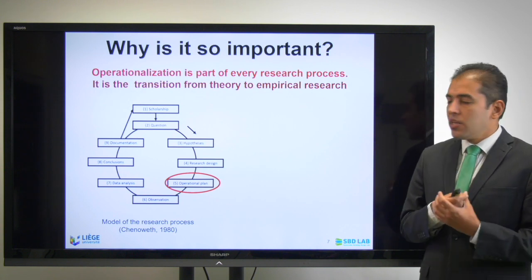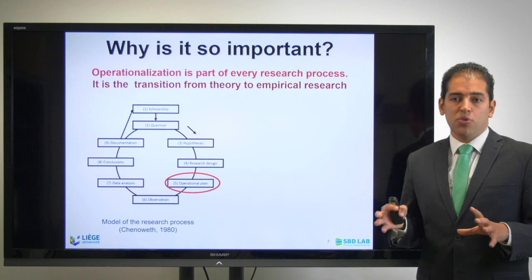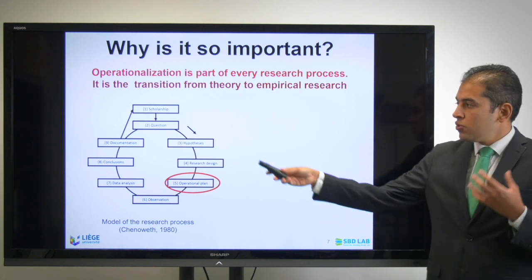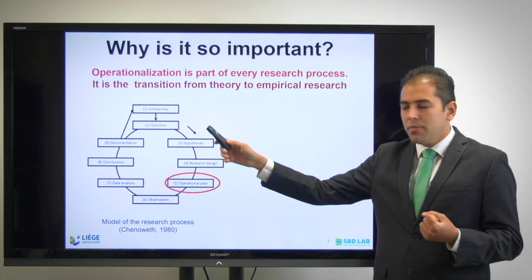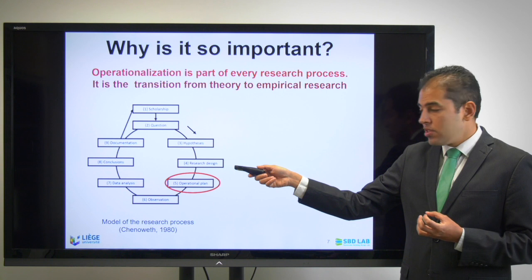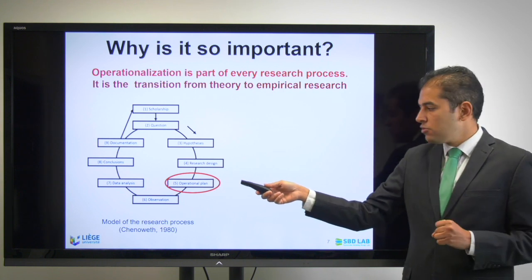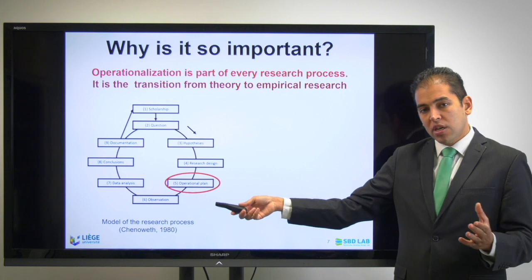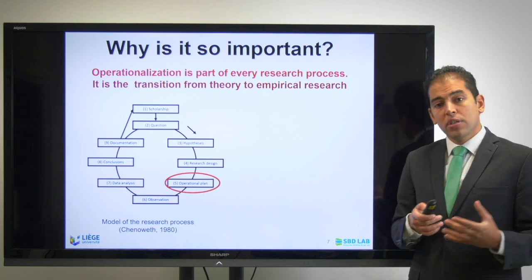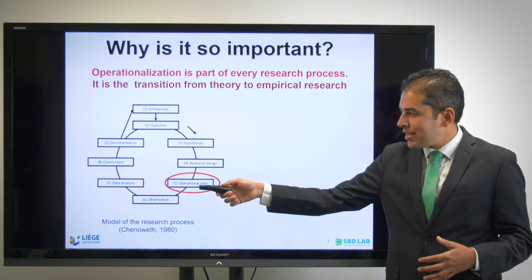Why is it so important to do the operationalization and variable definition step? Operationalization is part of every research process — it is the transition from theory to empirical research. As you can see in this graph, you start with a topic you're interested in, define a problem, form your research questions or hypothesis, do your research design, define your methodology, plan your operational work — exactly what you are going to measure — and then start the fieldwork directly after operationalization. You can also use it for literature reviews or qualitative research, followed by data analysis, conclusion, and documentation.